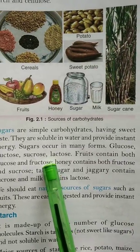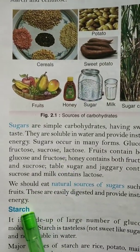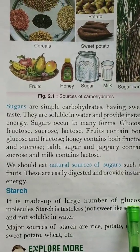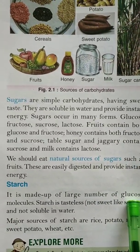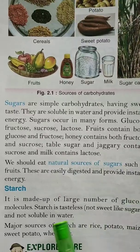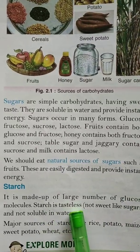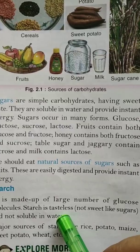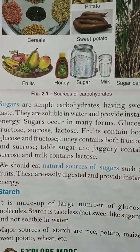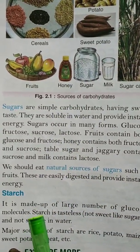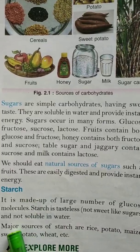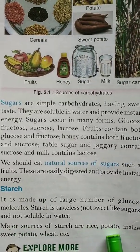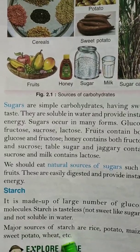The next one is starch. It is made up of a large number of glucose molecules. It is tasteless and not soluble in water — as you know, sugar is soluble in water, but starch is not. We get starch from rice, potato, maize, sweet potato, wheat, etc.